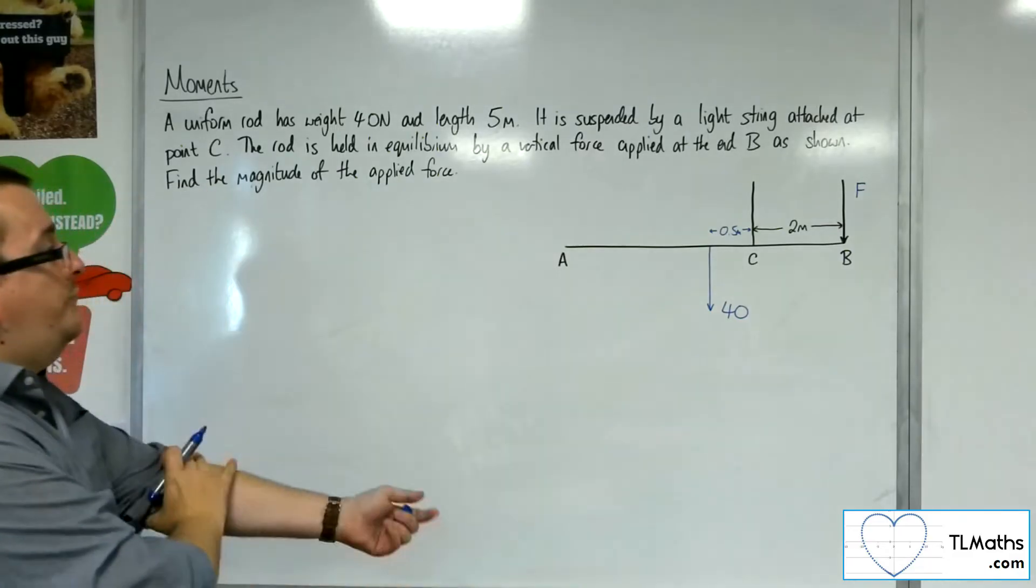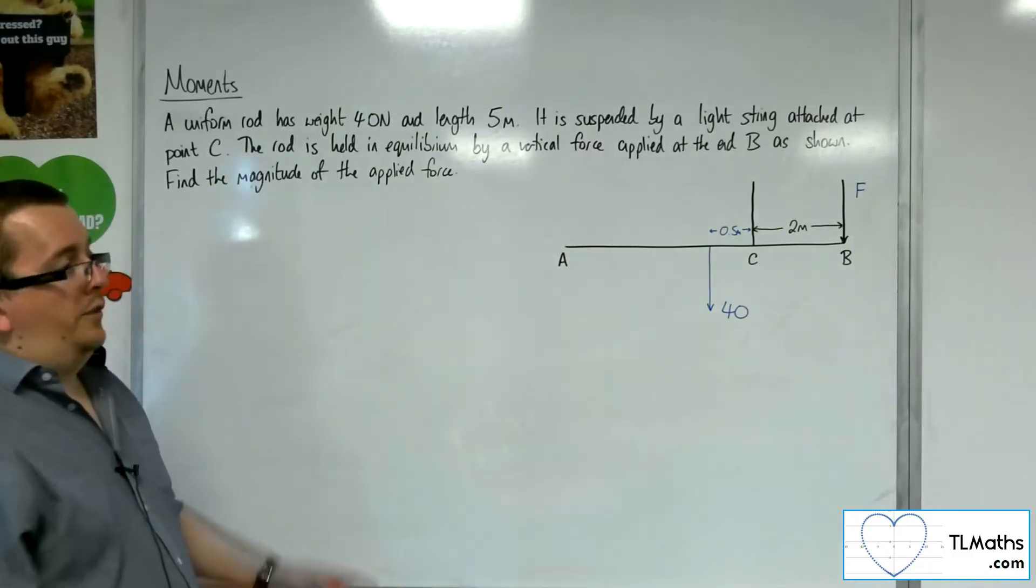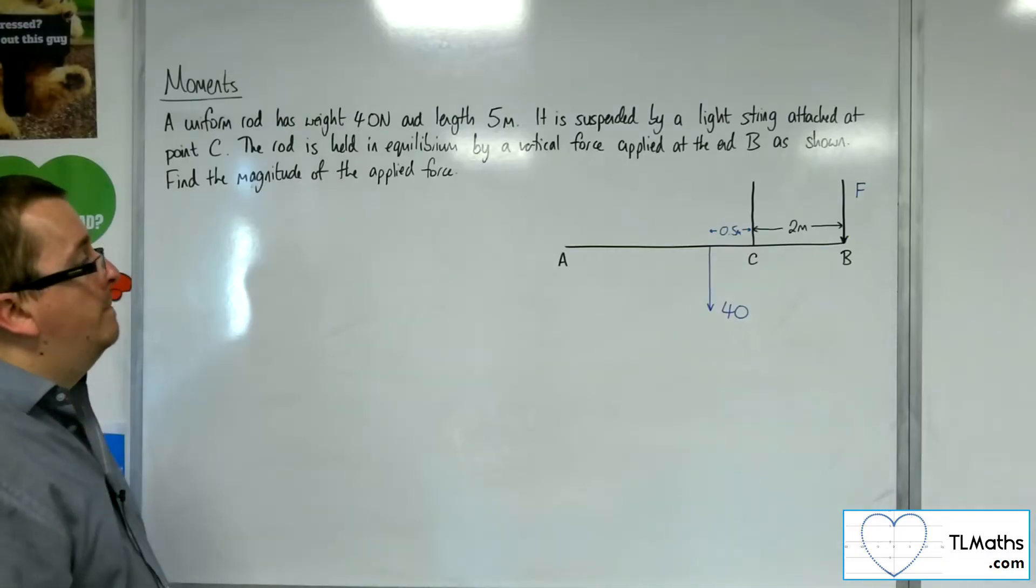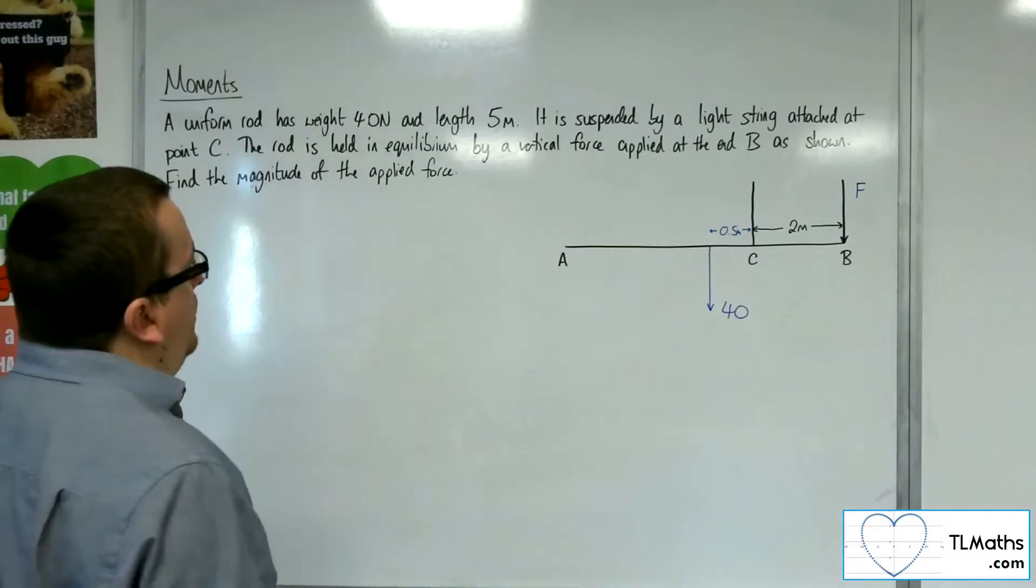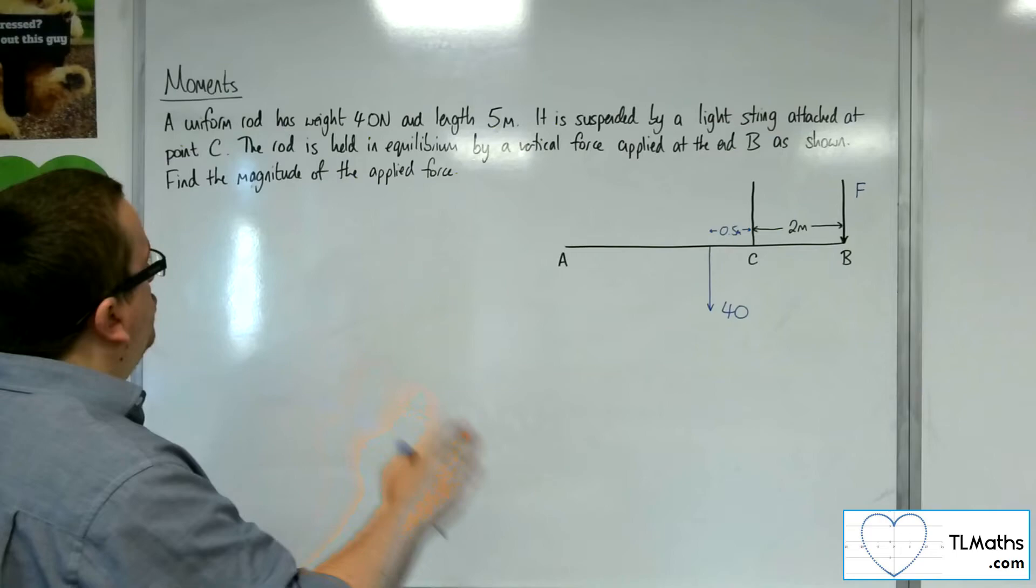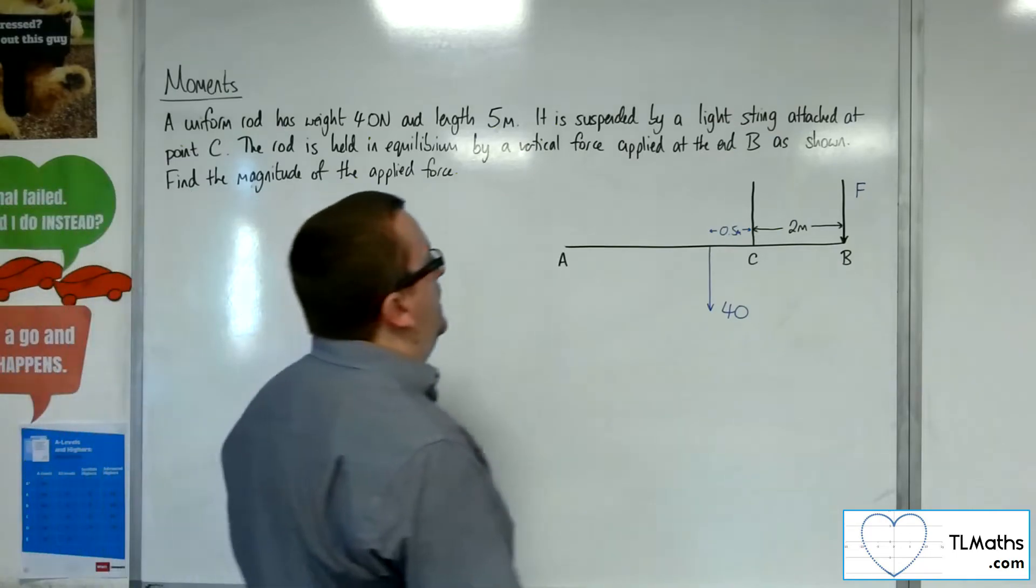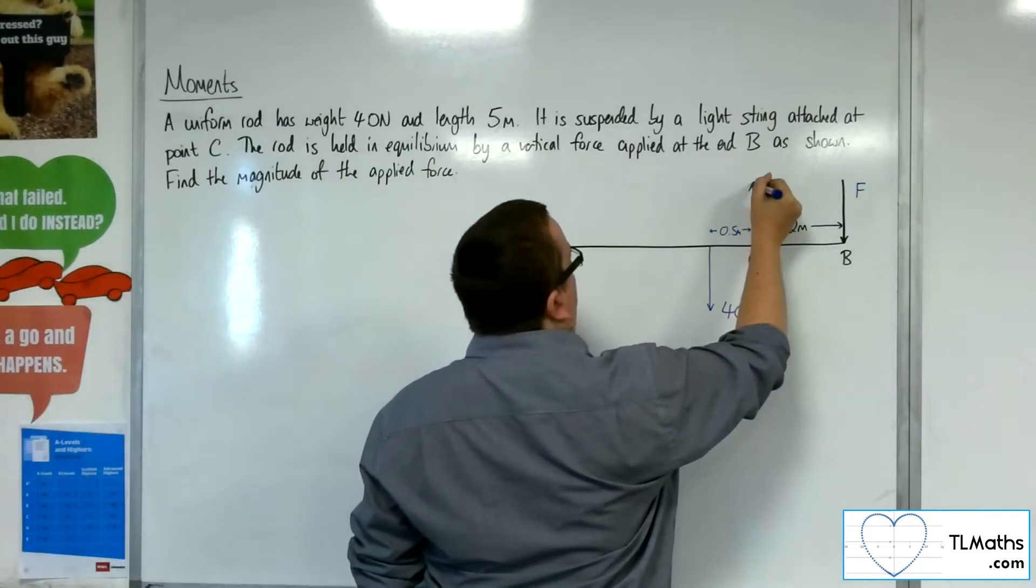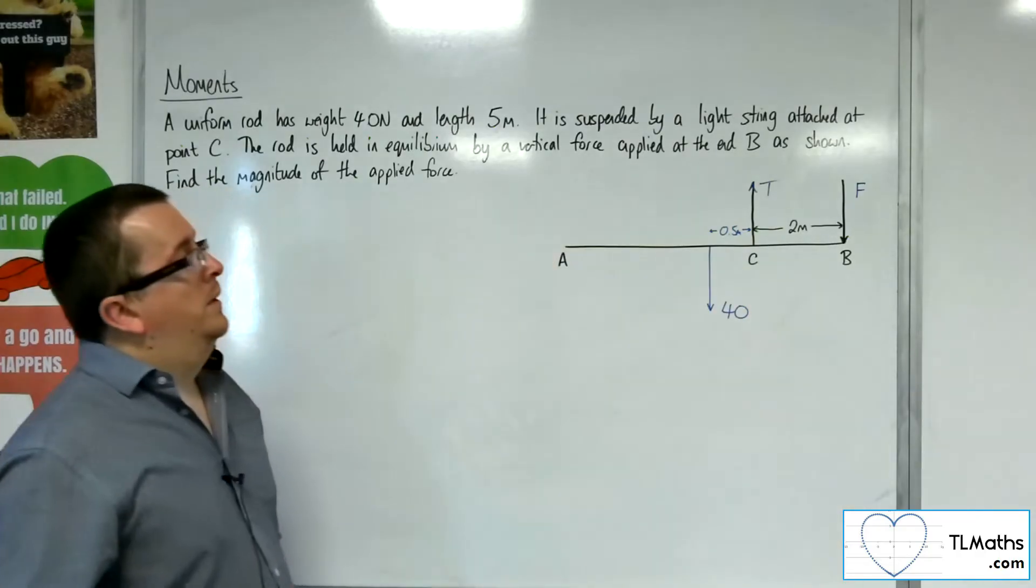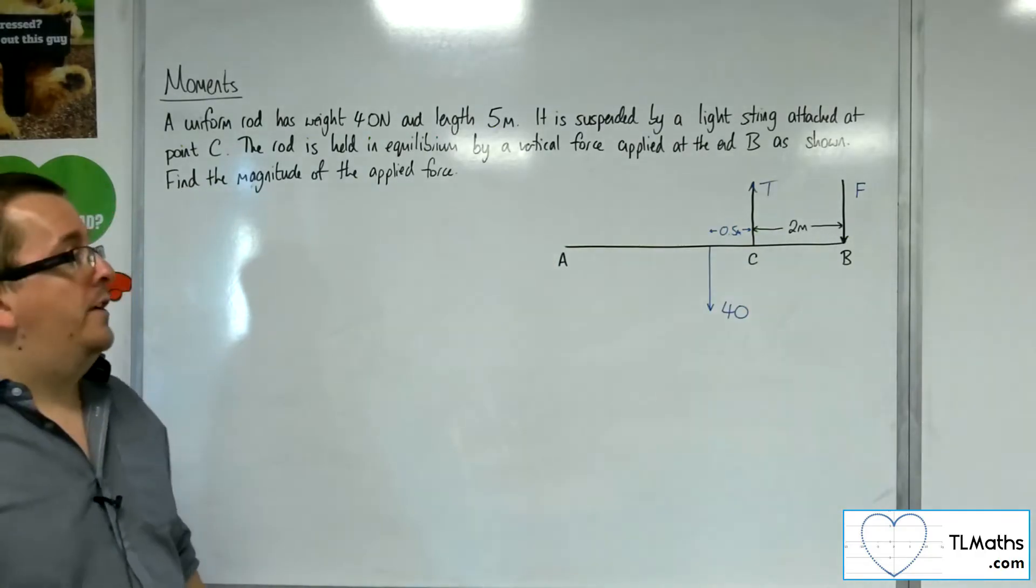and that will be half a metre away from C, so to make it the full 2.5 metres to B. What else have we got? Well, we know this is suspended by a light string attached at point C, so that must mean there is tension in that string, which in all likelihood we'll need to find as well.